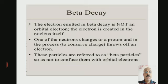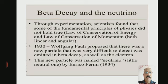One of the neutrons changes to a proton and in the process throws off an electron. These particles are referred to as beta particles, so as not to confuse them with orbital electrons.